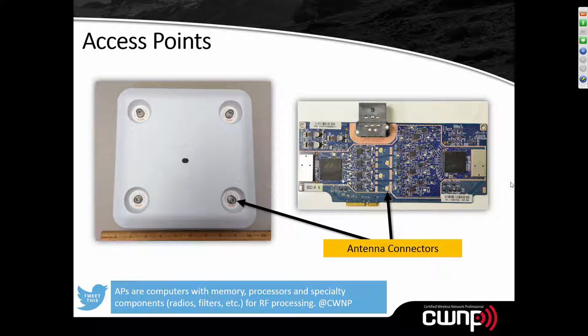You can use the FCC ID search to find out what's inside your wireless devices without taking them apart and risking damage or voiding the warranty. The FCC has already taken it apart — you can see PDFs with photos. This particular Cisco 3800 access point has two Ethernet ports capable of 1, 2.5, or 5 Gbps, one configurable radio and one 5 GHz radio, so it can run dual-band or dual concurrent 5 GHz radios.